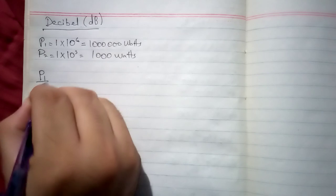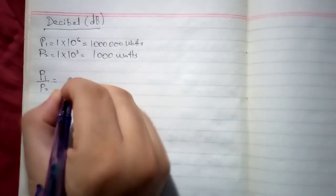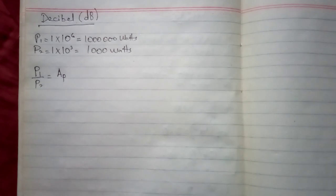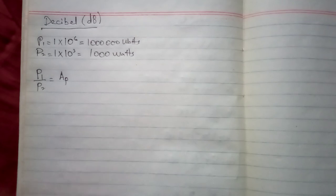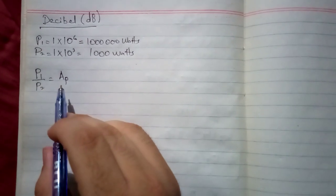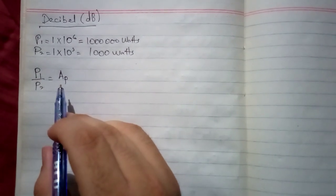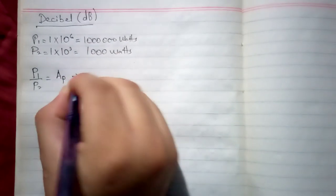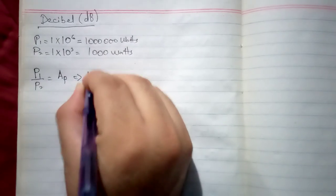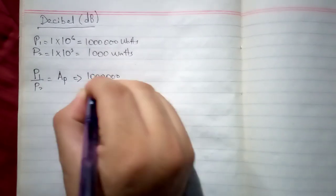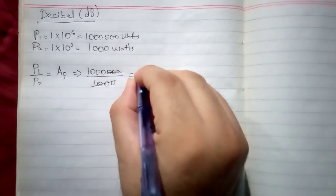Divide P1 by P2 to find the power gain. The symbol of power gain is AP. A is the symbol of gain and P written in the subscript is showing that it is the symbol for power gain. So it is equal to 1 megawatt divided by 1 kilowatt. 1000 is cancelled by these three zeros and the answer is 1000.